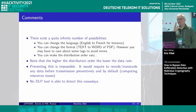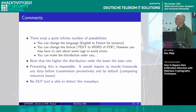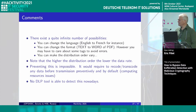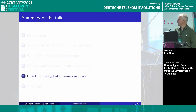You can do many things: change the language from English to French or any other, change the format. Preventing this is very difficult. One approach would be to perform transcoding — any outbound communication should be recorded and transcoded into a different format. That would require enormous computing resources. No existing DLP tool is currently able to detect this.